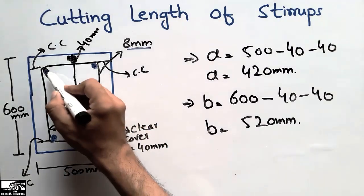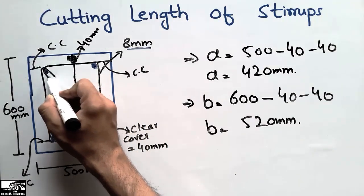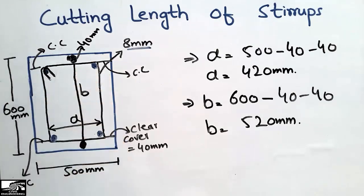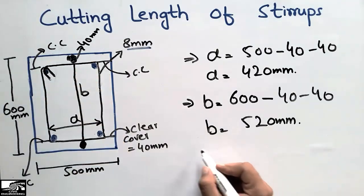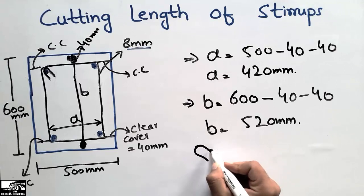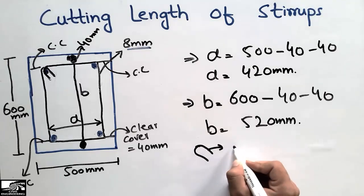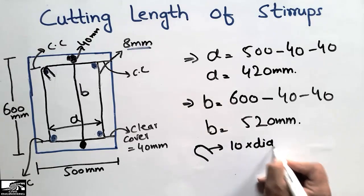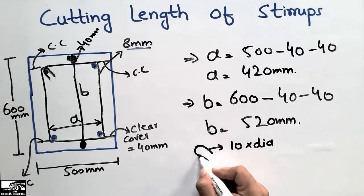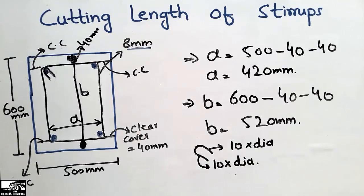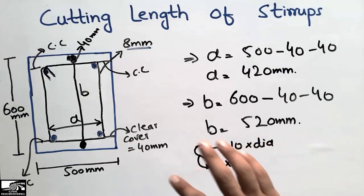Now we calculate the hook length. There are two hooks on the stirrup, and each hook length is taken as 10 times the diameter of the bar. So one hook = 10d, and there are two hooks total.